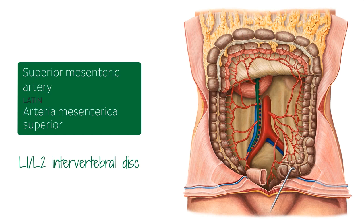The blood supply of the small intestine is also derived from this artery, through the numerous intestinal arteries that we can see stemming from its left hand side. This image, which is an anterior view of the abdominal cavity, will feature throughout the tutorial. In this illustration, most of the small intestine has been removed and the transverse colon has been reflected upwards, to give us a clearer view of the blood supply of the large intestine.